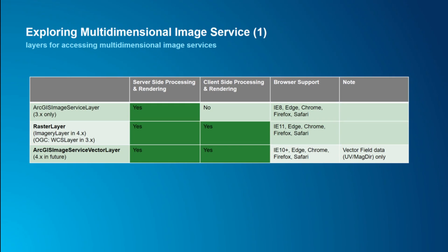By using the HTML5 canvas element, the Raster layer enables client-side pixel filtering, processing, and rendering, which is very important for scientific data. There is also an ArcGIS image service vector layer for vector field data representing two-band data for magnitude, direction, or U and V components. We also support OGC standards — WMS and WCS — available in JavaScript API. We don't yet have a WCS API in 4x, but you can use it in 3x.